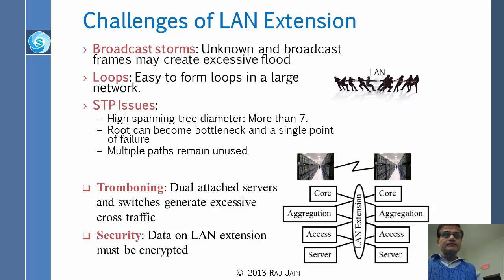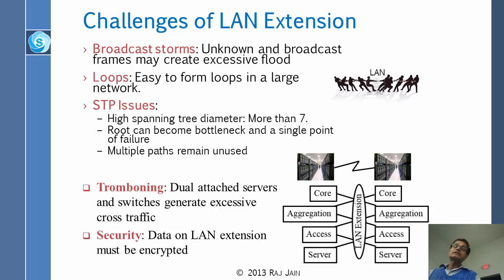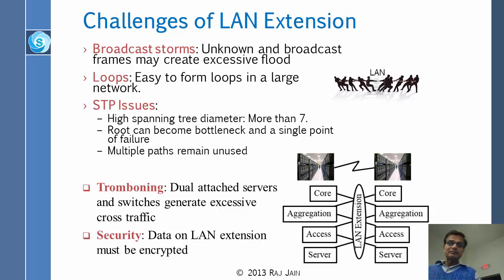The problems with LAN extensions are: first, broadcast storms. If you have a LAN with 10,000 or 20,000 machines, you have lots of broadcast. The whole thing is called BUM — broadcast, unicast, and multicast. All three of those traffic types are flooded, and they can cause broadcast storms. Then with big networks, you can easily form loops, and therefore spanning tree gives you a lot of trouble.